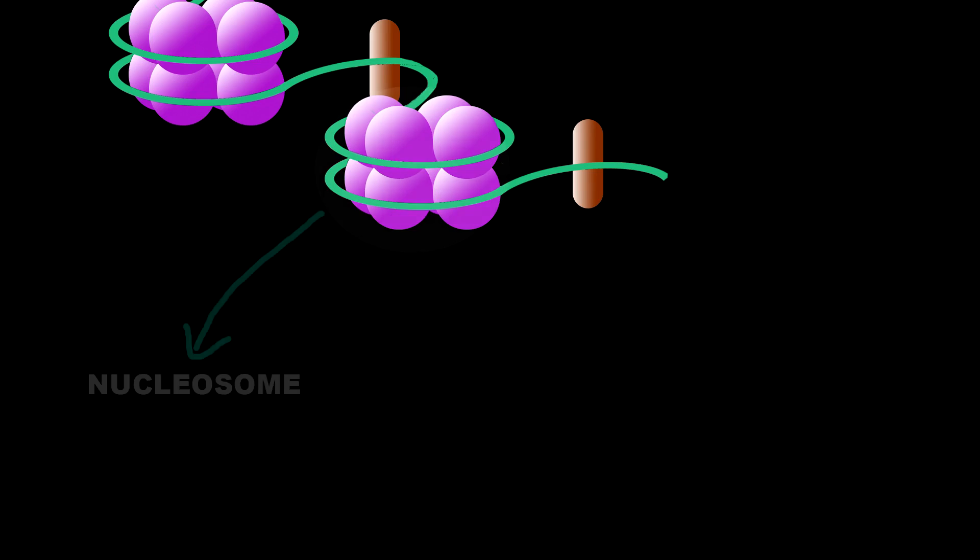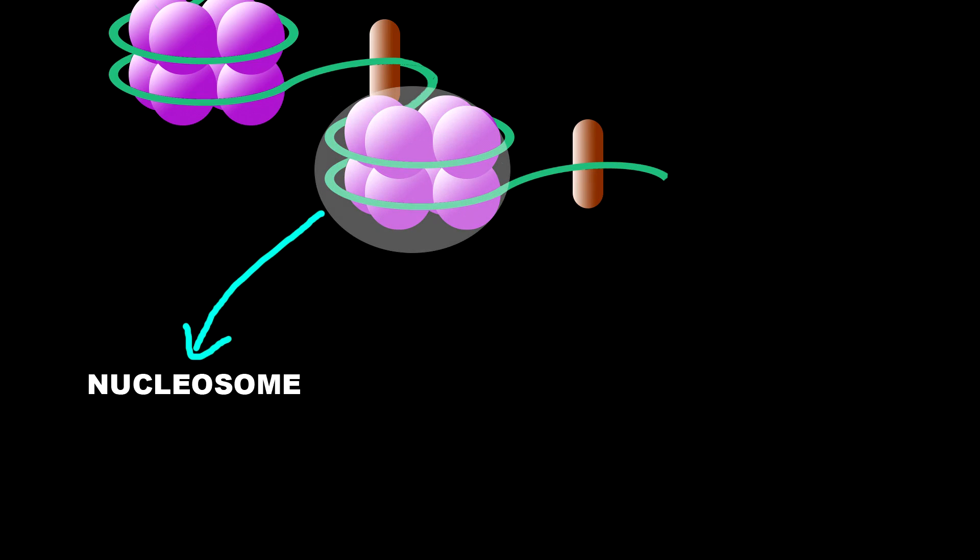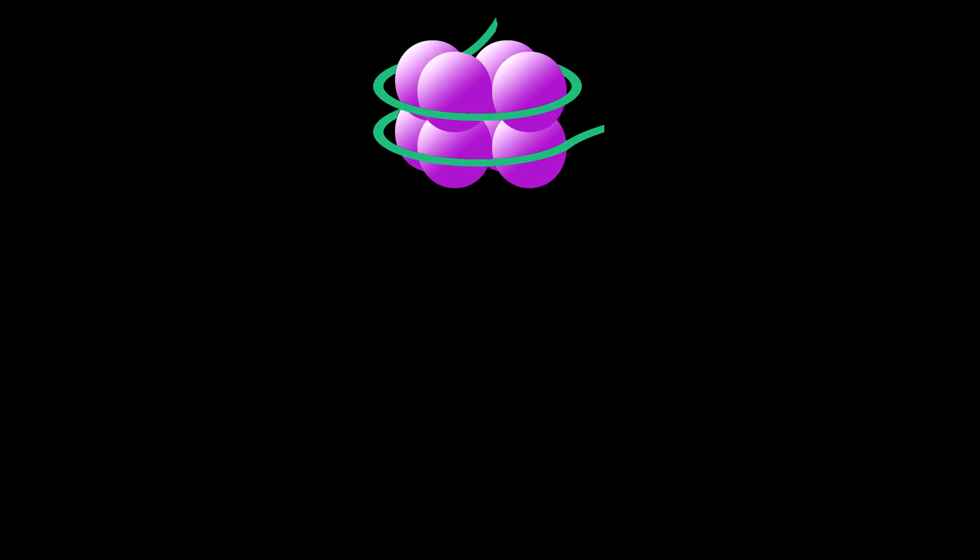Now, what is the nucleosome solenoid model? In this model, you can see chromatin which consists of three parts: nucleosome, linker DNA, and histone H1 protein. The nucleosome consists of two parts: nucleosomal DNA, which contains 146 base pairs, and core histone protein.